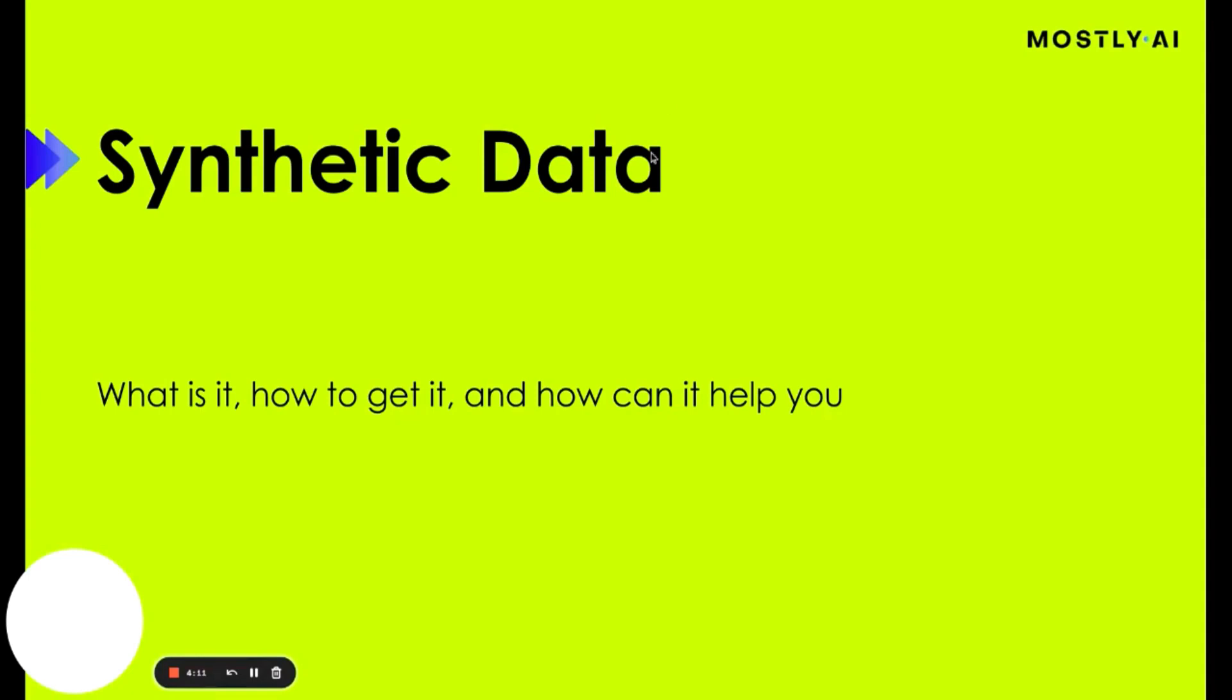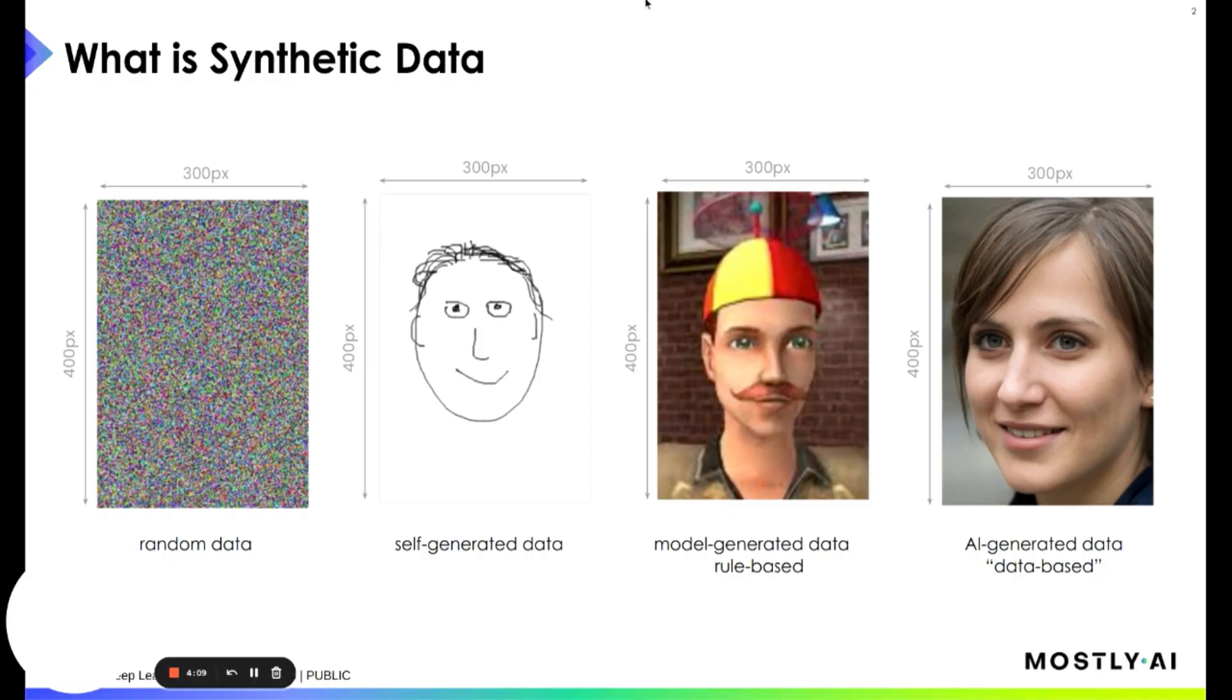Let's dive right away into what is synthetic data. I would say there are different types of synthetic data, or people call different things synthetic data. For example, random data is one form of synthetic data. It's not super smart but it has its place. Imagine the software testing use case - as long as the shape is correct, in this case 300 pixels by 400 pixels, you can use such data for smoke tests or throughput and load tests.